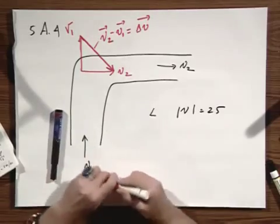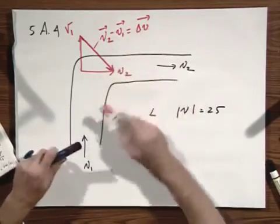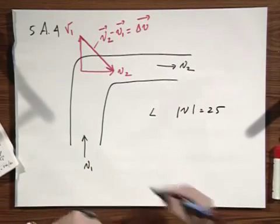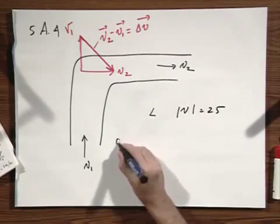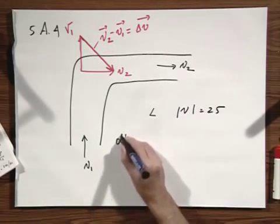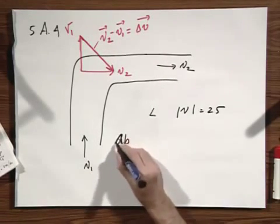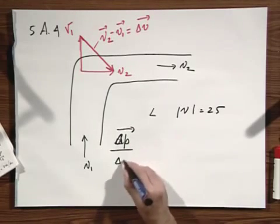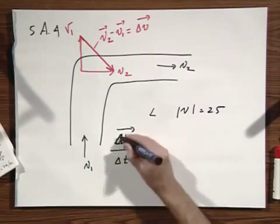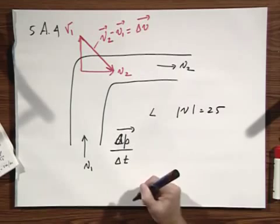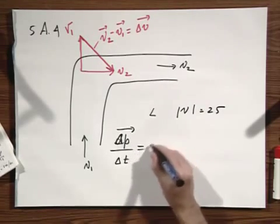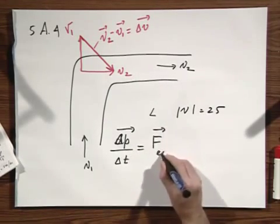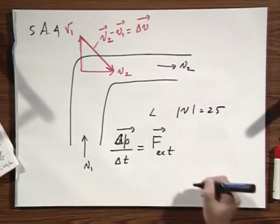If there is a change in velocity, there must be a force on the system. Remember dP/dT — or writing it in discrete form, delta P over delta T — which is the change of momentum per unit time, equals the external force.